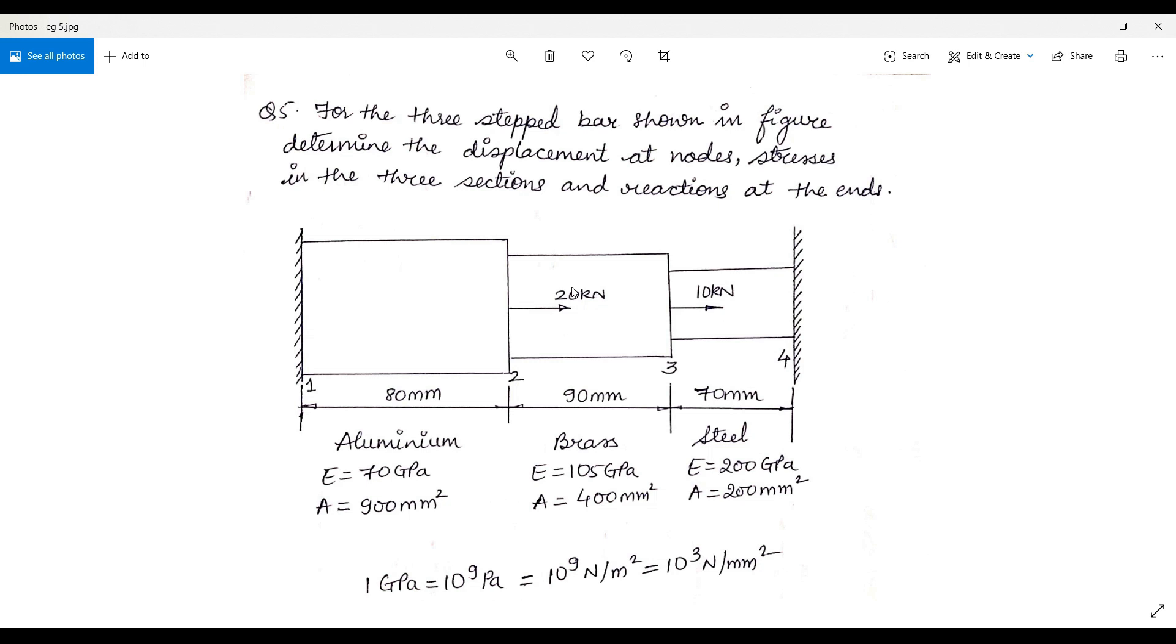Here at node 2, three conditions are satisfied. Similarly at node 3, there are three conditions satisfied: change in geometry, sudden loading coming into picture and also change in material.